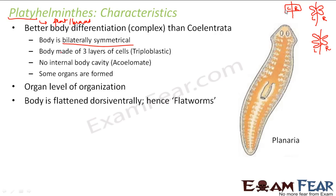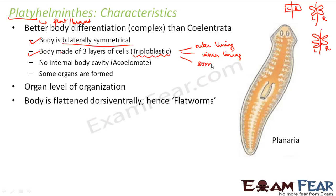Platyhelminthes were the first animals whose bodies were bilaterally symmetrical, and all animals that came after them are also bilaterally symmetrical. Their body is made of three layers of cells, which is why they are called triploblastic — 'triplo' means three. Earlier, cnidarians had two layers; here there is a third layer used to make some body organs.